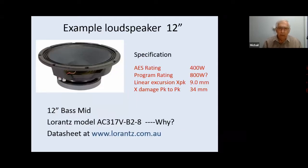So what we're going to be talking about is my example, a 12-inch loudspeaker that we actually manufacture. The reason I've selected this particular loudspeaker is the fact that I know a lot about this loudspeaker. It has been both finite element analysed, the magnet's been FE analysed. We've done lots of power testing, and we've optimised most of the thermal cooling, the cone, everything. Its AES rating is 400 watts by the 1984 standard. And its program rating is 800 watts. And its linear cone excursion is 9 millimetres. And the X damage is peak-to-peak 34 millimetres. If you want a data sheet, it's on the Lowrance website.